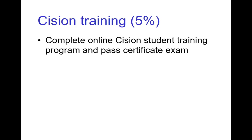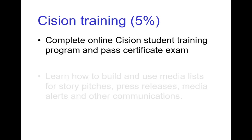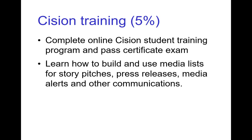Cision Training: you may already know what Cision is. It's an online company that puts together media lists of traditional media such as TV, newspapers, and radio, but it also includes online influencers, bloggers, and websites. It's a great resource for anyone in PR, and knowing how to use it will give you a leg up in your career and even in getting a job. In that course, you'll learn how to build and use media lists for story pitches, press releases, and media alerts — all three are assignments in which you'll need media lists. Learning this will be extremely beneficial both in this course and in your work.